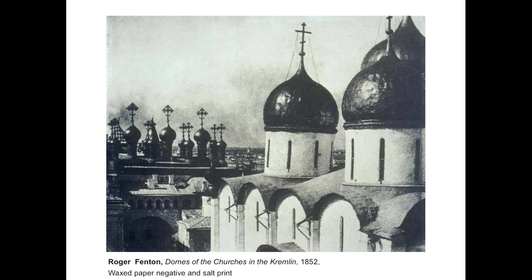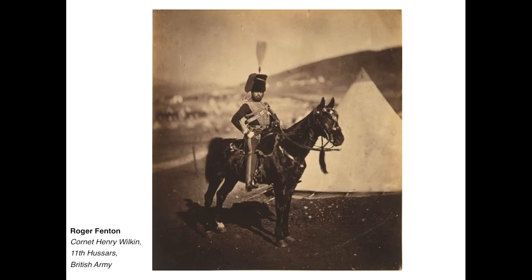He met and became friendly with Queen Victoria and photographed the royal children, also in 1854. He had switched to the wet collodion process in 1853 and worked as a photographer for the British Museum for seven and a half years beginning that year. A Manchester publisher, Thomas Agnew, was approached about a cooperative venture to document the Crimean War. Under semi-official patronage, he was to send a photographer to the war to produce pictures that could be sold back home. He suggested Fenton; the backers sought to boost public support for the war.